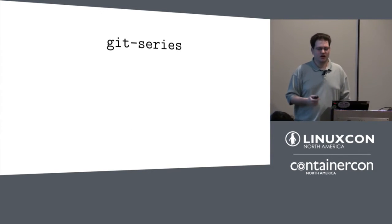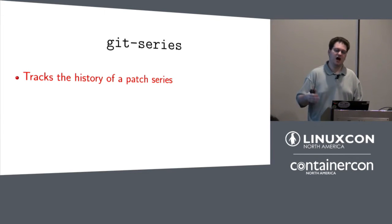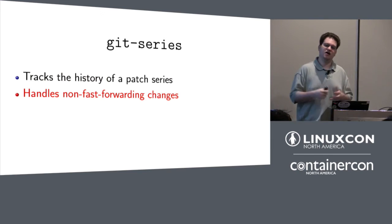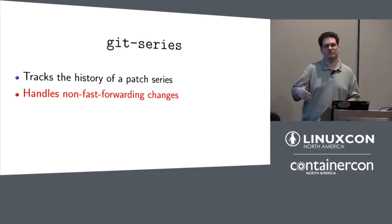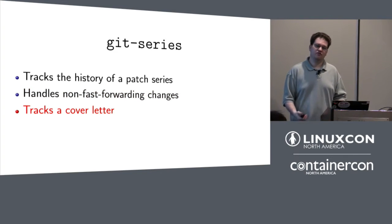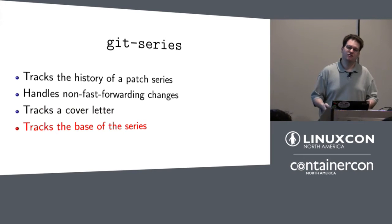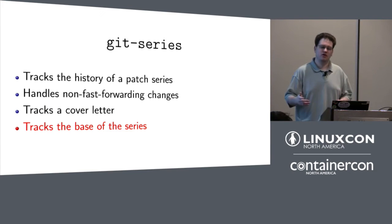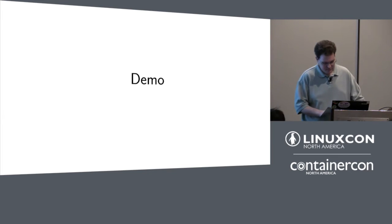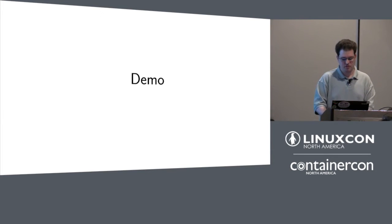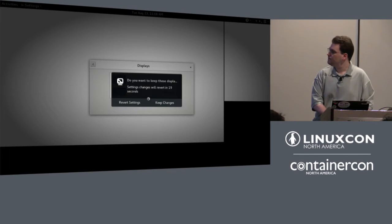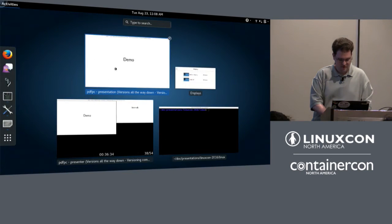This is the set of problems that I built Git Series to solve. Git Series tracks the history of a patch series — how you've changed it through non-fast-forwarding changes. You can rewrite history and it will keep track of what the old history looked like, including a commit message telling you what you were doing. It tracks a cover letter so you can version it over time, and it tracks the base you started your series from to make it easy to rebase. Before I go into how this works in detail, I'd like to give a demo.